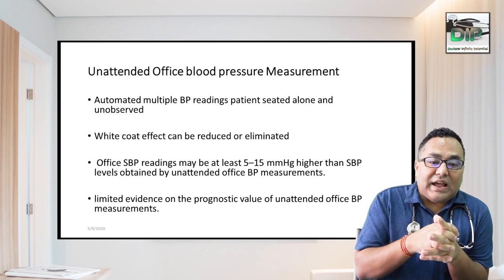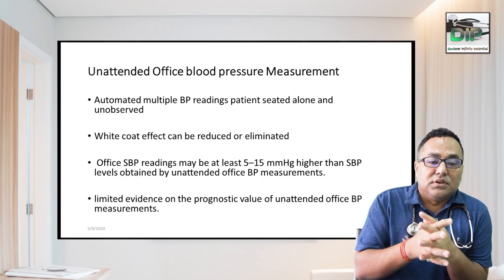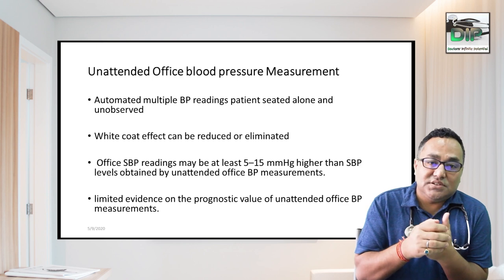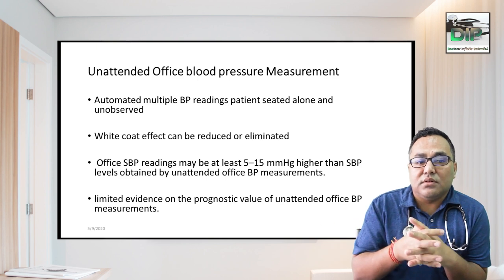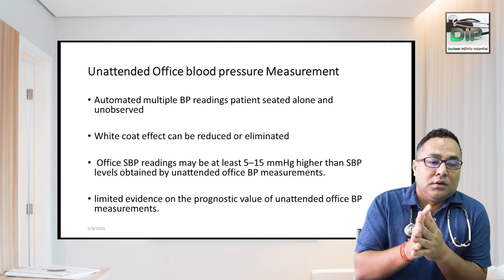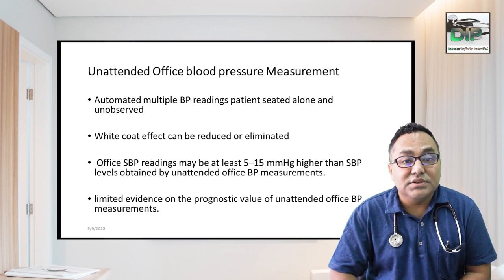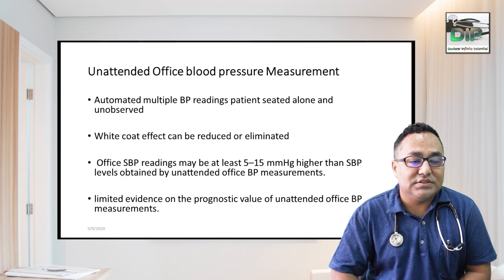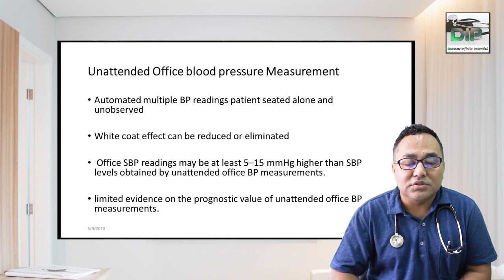The types of BP measurement instruments include aneroid, digital, and mercury. Mercury is banned due to biomedical hazard, so you should not use it. Use aneroid or digital instruments. For unattended or home blood pressure measurement, use a home digital BP instrument. This helps reduce and eliminate the white coat effect. The OPD systolic BP measurement is always 5–50 mmHg higher than home blood pressure measurement by digital device.